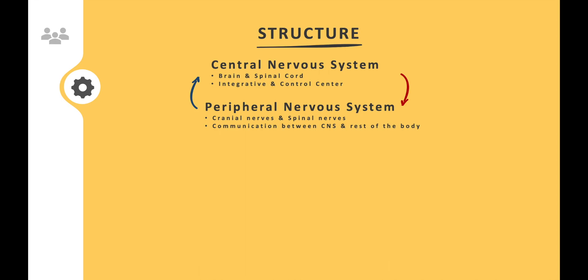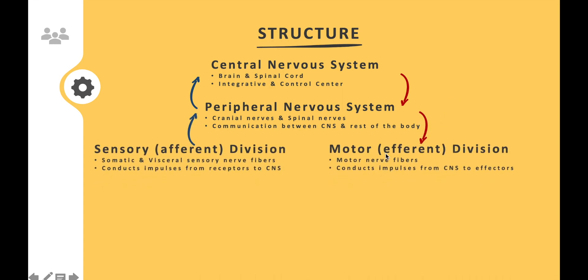The result of that decision making — whatever action needs to be taken — is then relayed to the peripheral nervous system. The peripheral nervous system has two divisions: the sensory division, also known as the afferent division, and the motor division, also known as the efferent division. There's a key difference between them: the sensory division relays sensory information to the CNS, while the motor division relays commands related to motor information from the CNS.